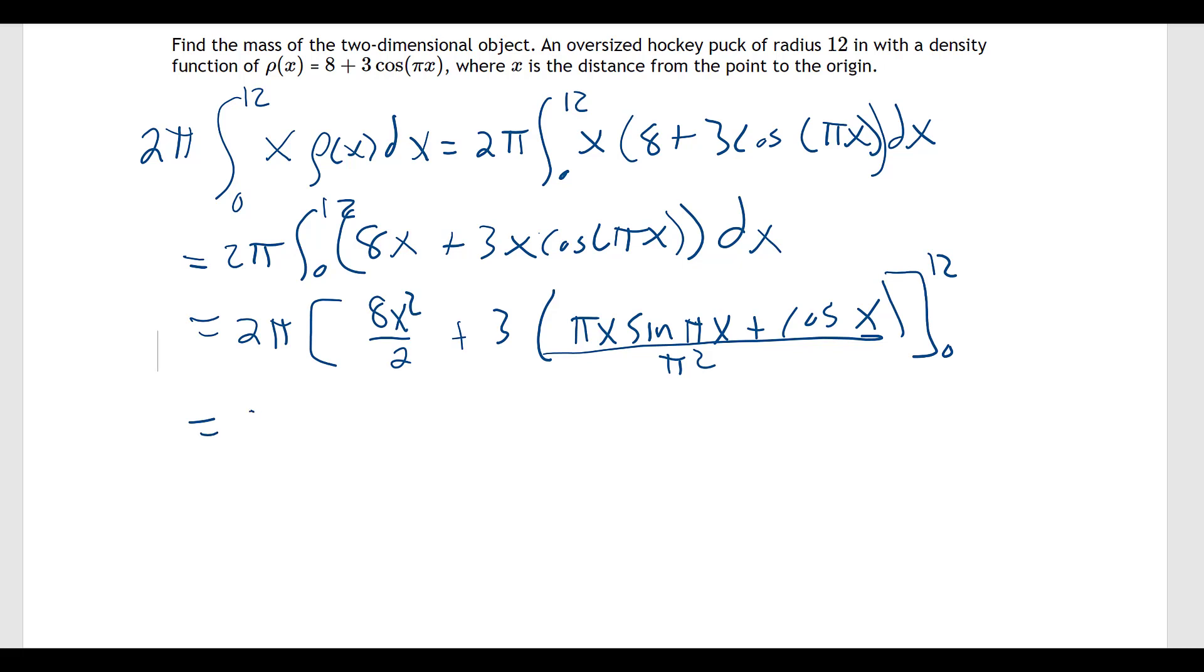And we can simplify that a little bit: 2π times [4x² + (3x sin(πx))/π + (3cos(πx))/π²] from 0 to 12.